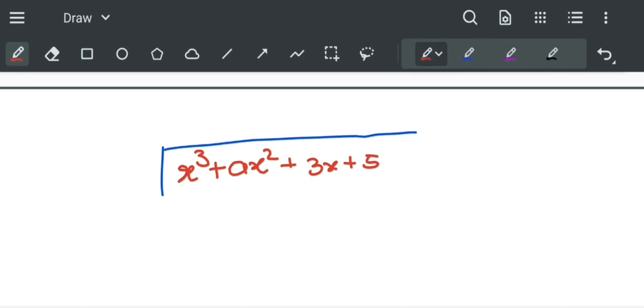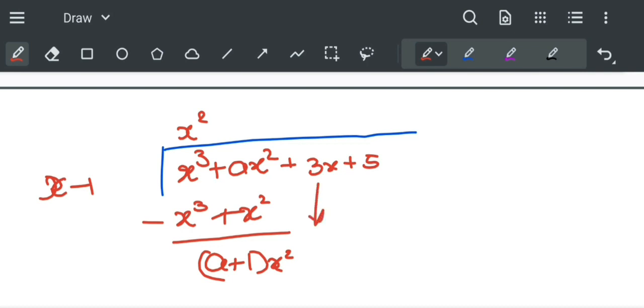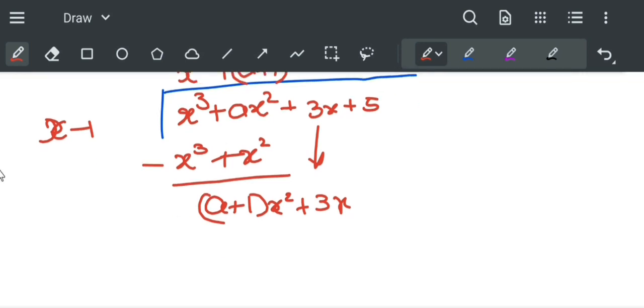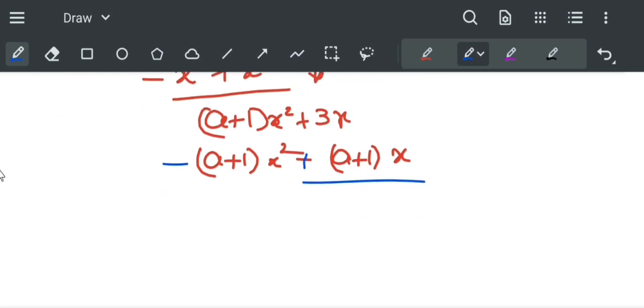Dividing by x minus 1: x² gives x³ minus x², which gives us (a+1)x² and this 3x comes down, plus 3x. (a+1)x² minus (a+1)x gives 4+a as 3 plus a plus 1 is 4+a.